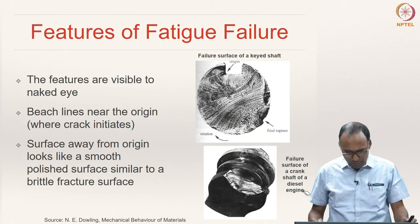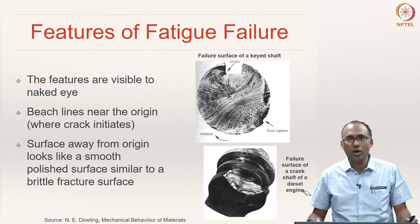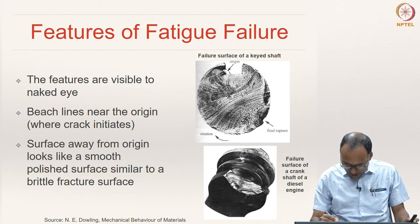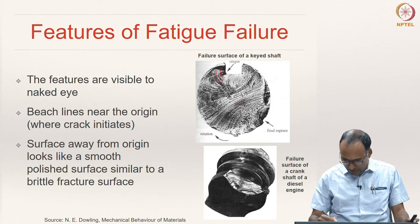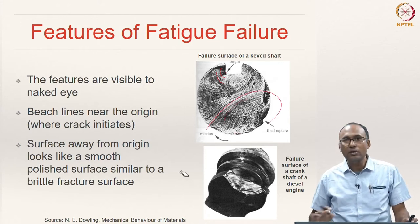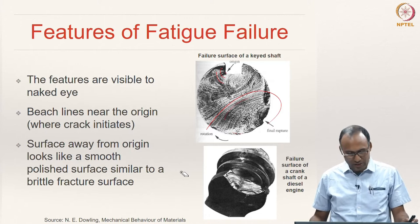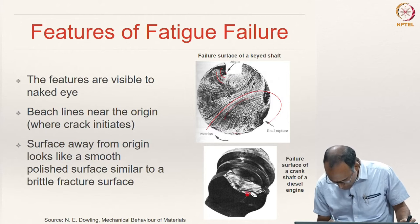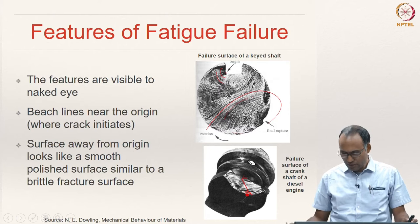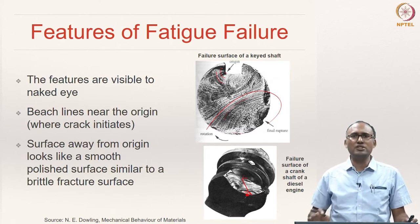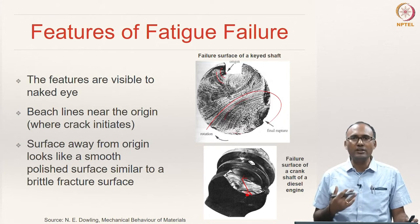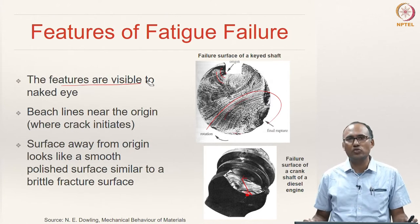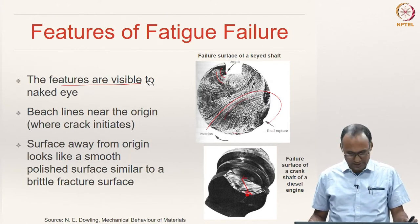These are the features already seen on how a failed specimen under fatigue looks. In the first figure you can clearly see crack initiation, beach line marks, and a very smooth final failure area. Similarly, in the second figure you can see crack initiation, beach line marks, and then the crack zips through and breaks. These typical features are visible to the naked eye — you do not need a microscope to observe them.